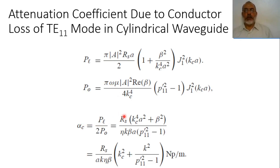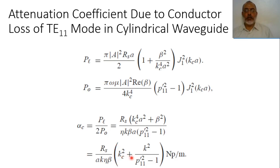This simplifies to α_conductor equals R_s over (a k_θ β) multiplied by (k_c² + k² ) over (b'_11² − 1), in nepers per meter. If I want to obtain this value in dB per meter, I multiply this value by 8.686.